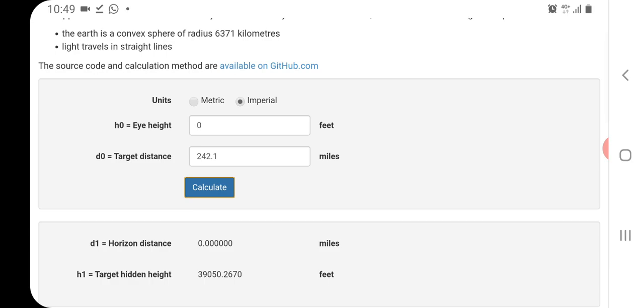So all I'm interested in here is just getting some idea how much the ground curves away, and we calculate. And it turns out the ground curves away at 39,050 feet. Okay, so we've got that as a reference now.